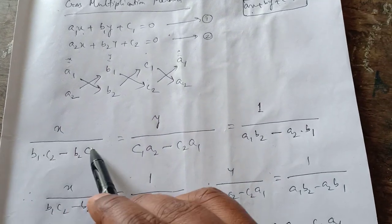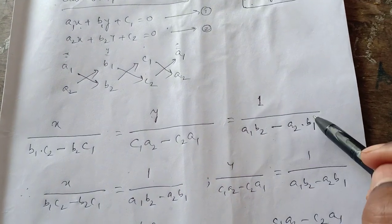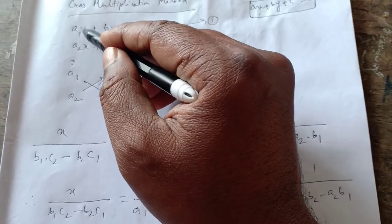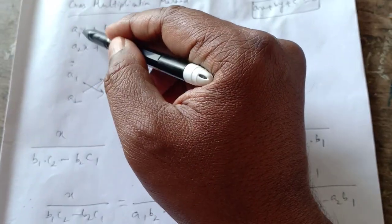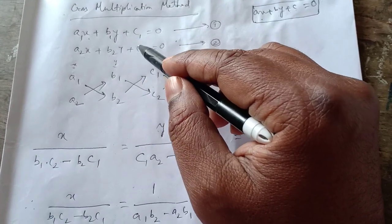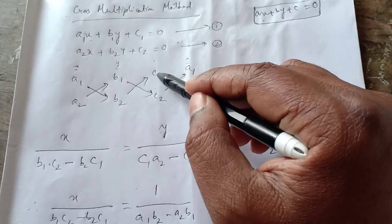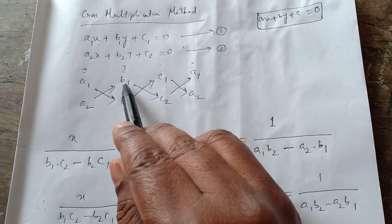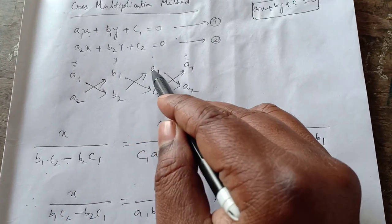Then you write X by, Y by, and 1 by. Below X, remember, we shall not write the coefficients of X. We shall cross multiply the coefficients of Y and the constants. The coefficients of Y are B1 and B2 and the constants are C1 and C2. First you multiply B1 into C2, then write minus B2 into C1.